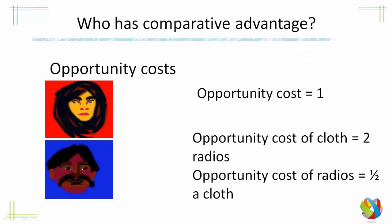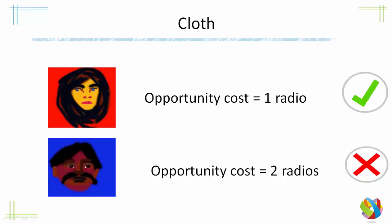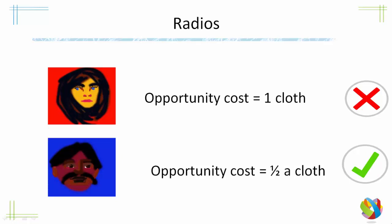So who has the comparative advantage? For Mary, her opportunity cost for either item is one. For Peter, the opportunity cost for cloth is two radios, so each extra piece of cloth costs him two radios worth of production. His opportunity cost for radios is half a cloth. Therefore, in cloth production, Mary has the lowest opportunity cost — one radio versus Peter's two radios — so Mary should concentrate on producing cloth. For radios, one radio costs Mary one cloth, but for Peter one radio only costs half a cloth, so he has the lowest opportunity cost and should concentrate on producing radios.